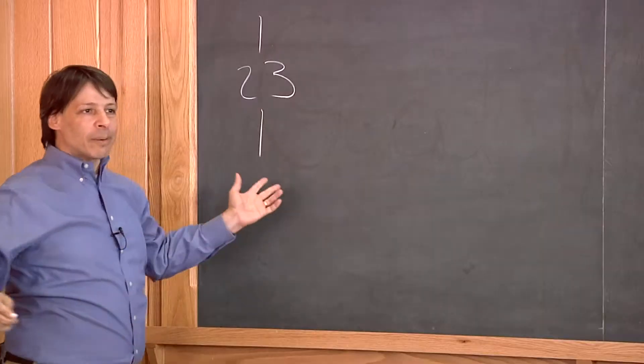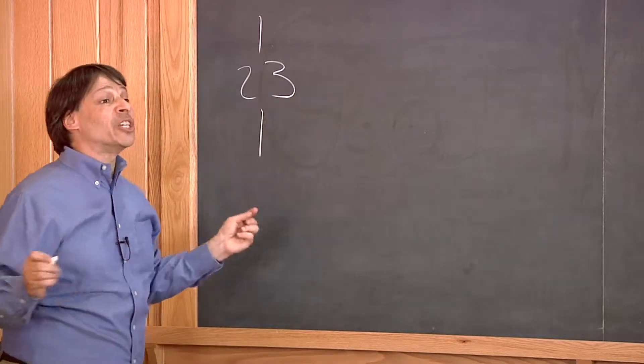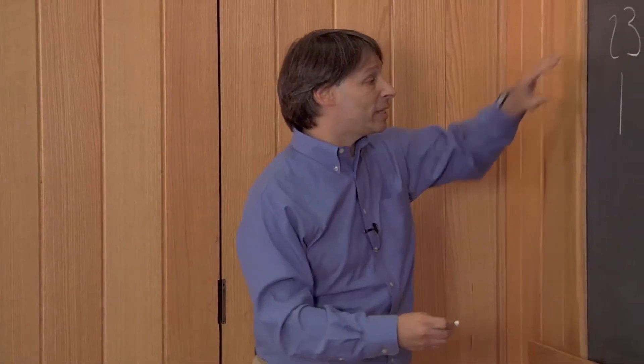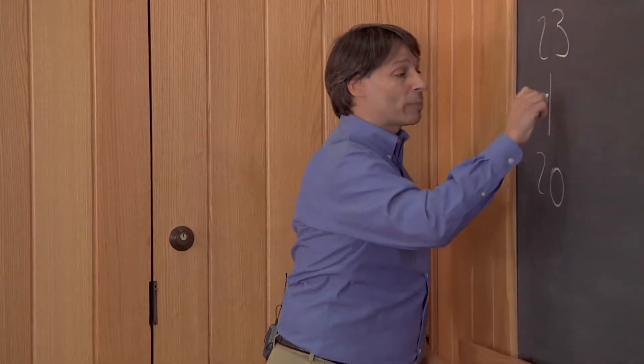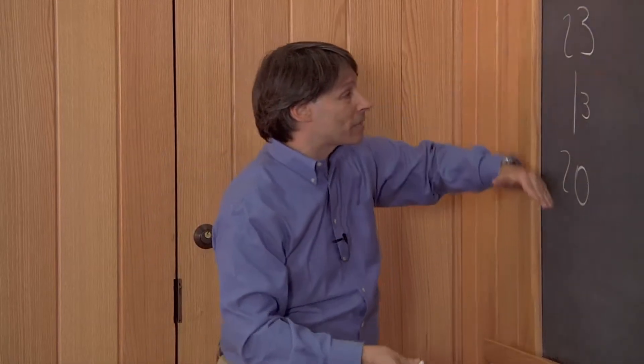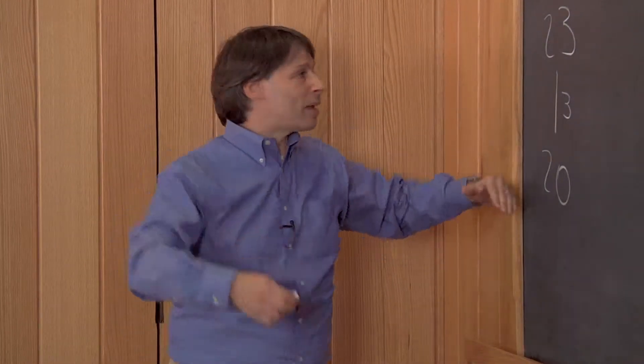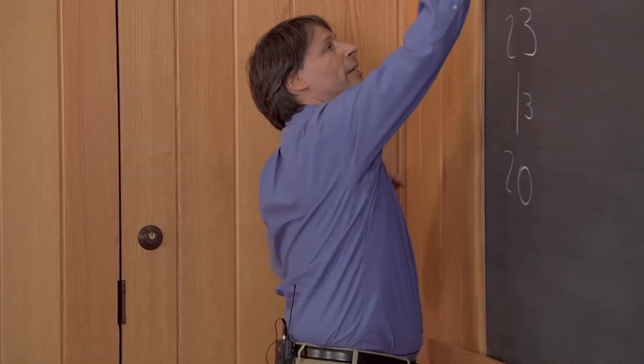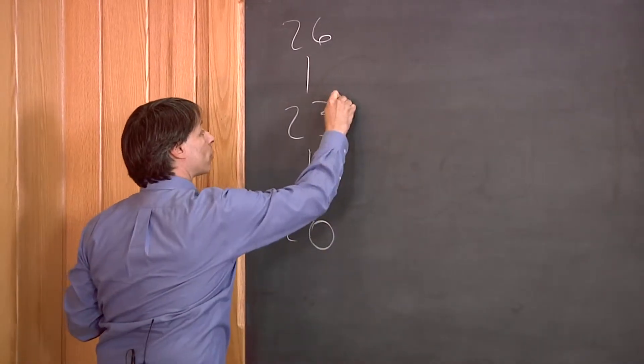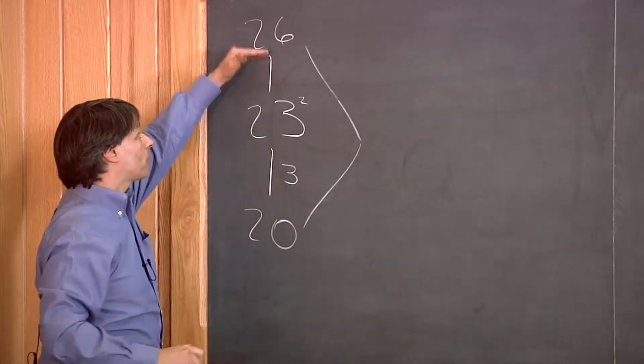Now, to square the number 23, I go up or down to the nearest easy number. In the case of 23, that nearest easy number is 20. So I'm going to go down 3 to 20. Now, whatever comes down must go up. If I go down 3 to 20, I balance it by going up 3 to 26. So the first part of my calculation of 23 squared is I do 26 times 20.